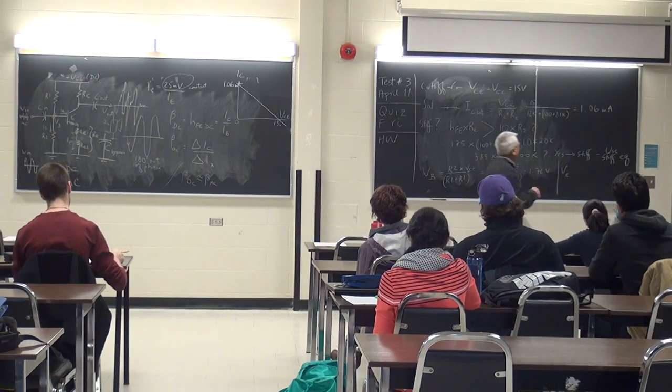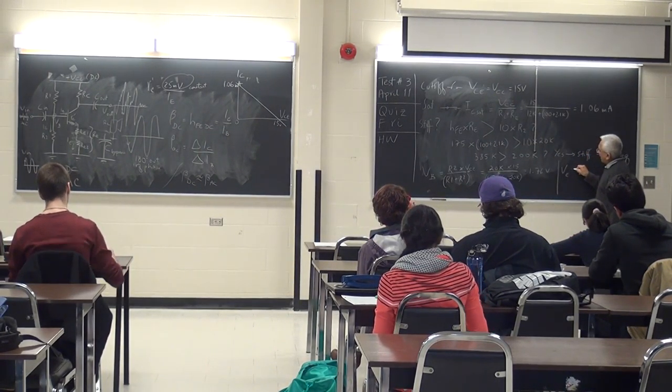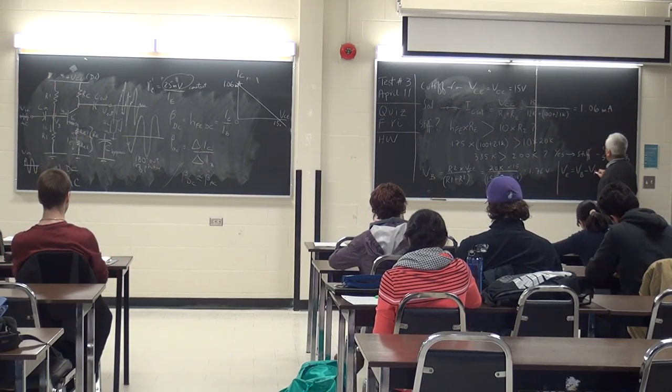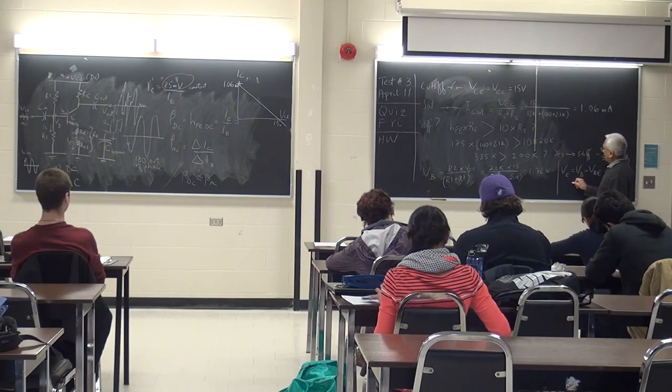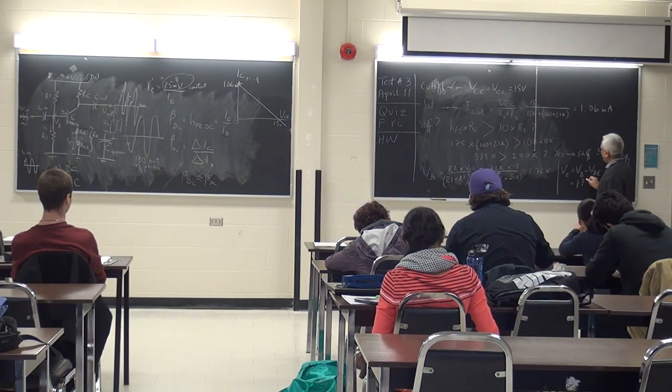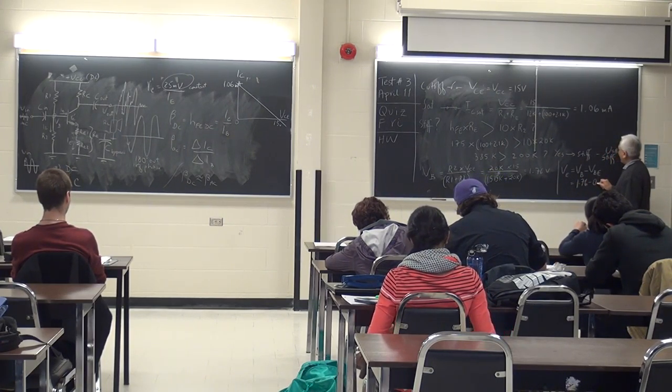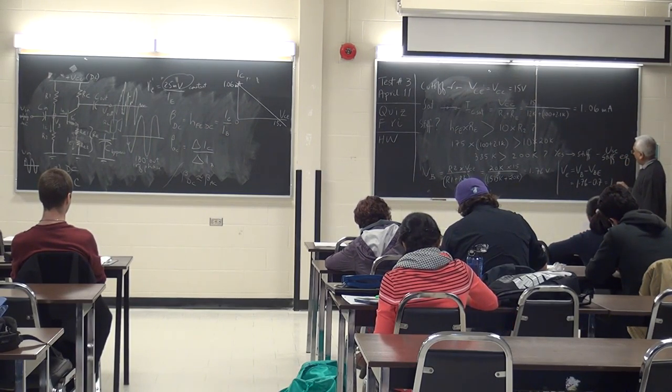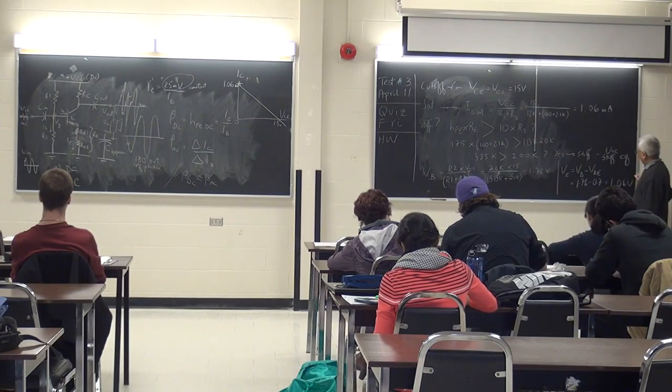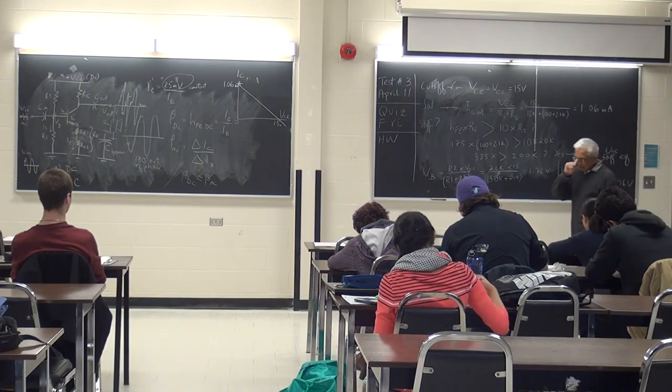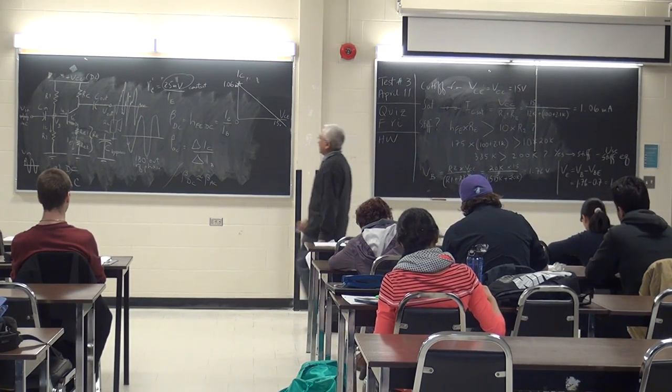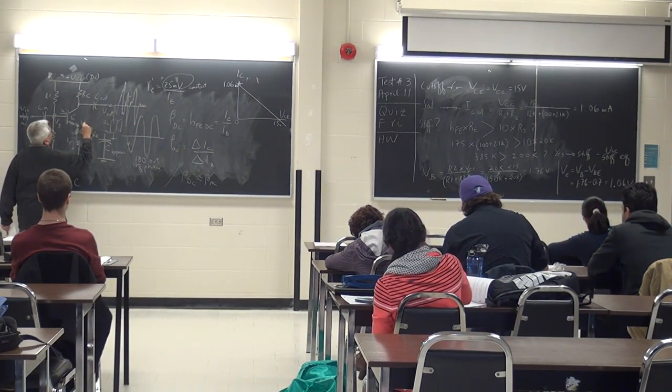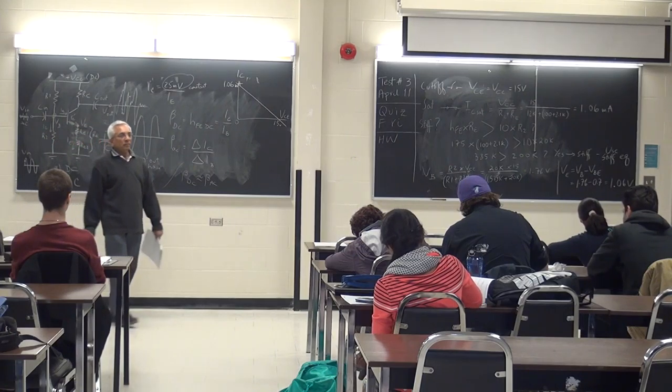So VE is always 0.7 lower than VB. So that's 1.76 minus 0.7. VBE is like the PN junction, so that's 1.06 volts. VE is the voltage at the emitter, right here.